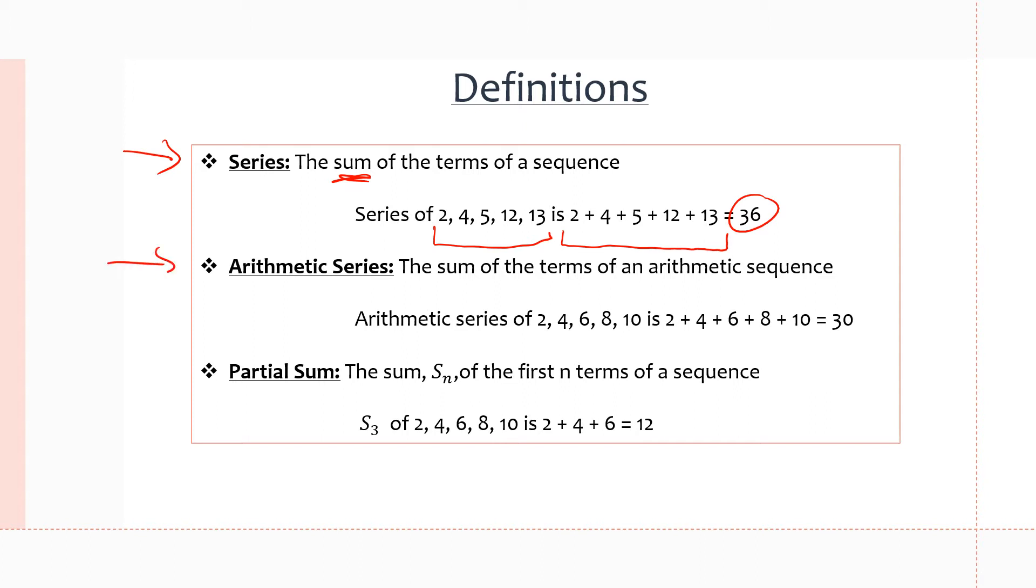Now an arithmetic series is simply the series of an arithmetic sequence. So the only difference between series and arithmetic series is with arithmetic series, we are working with arithmetic sequences. So if we take a look at the example below, we have an arithmetic sequence of 2, 4, 6, 8, and 10. Because we have the same common difference between each term, we're just adding 2 to get the next term.